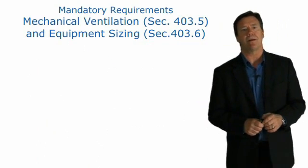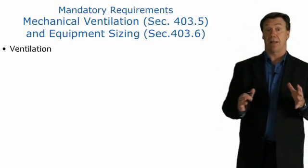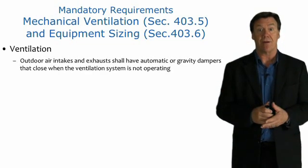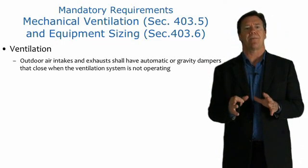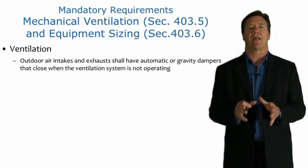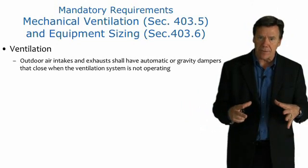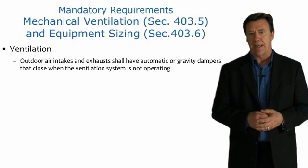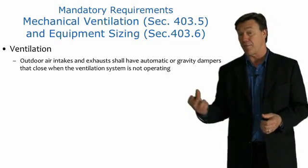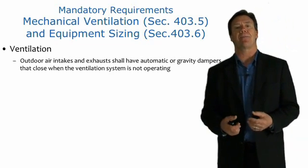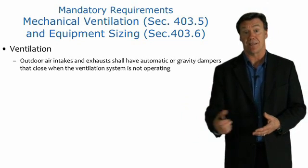Another mandatory requirement is mechanical ventilation. Under section 403.5, ventilation requires outdoor air intakes and exhausts to have automatic or gravity dampers that automatically close when the ventilation system is not operating. As houses are being tightened up, we need fresh air ventilation, but the ductwork providing that fresh air must have dampers that close when the ventilation or HVAC system is not operating.